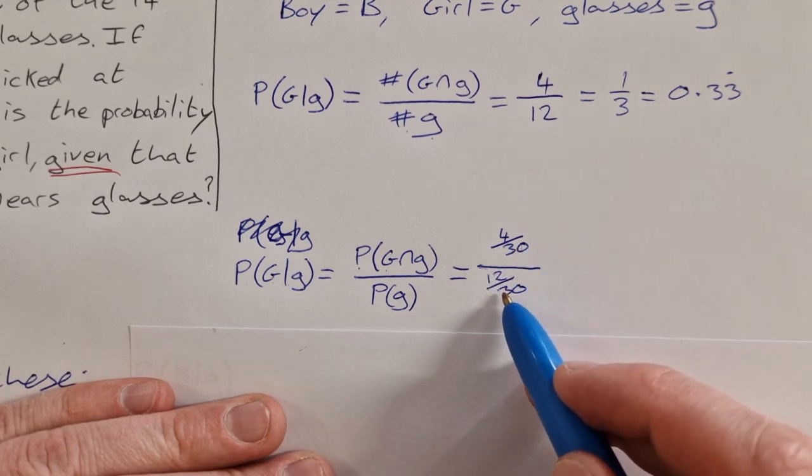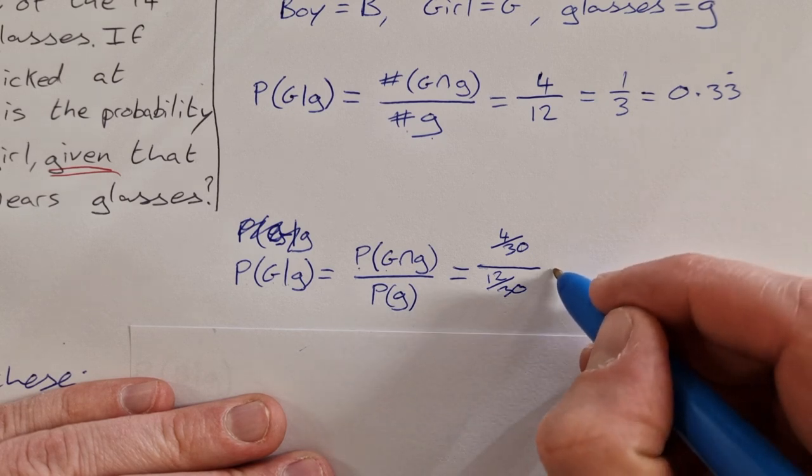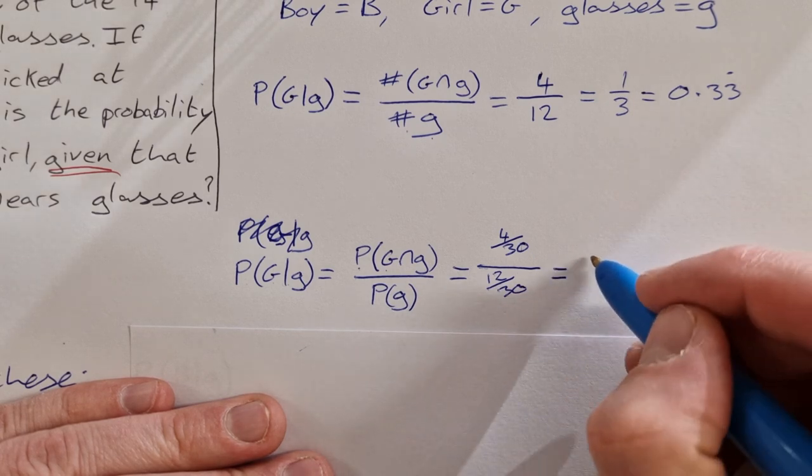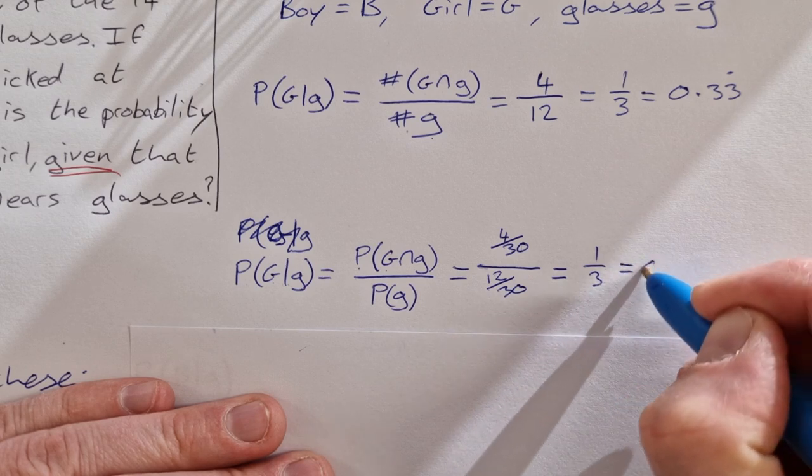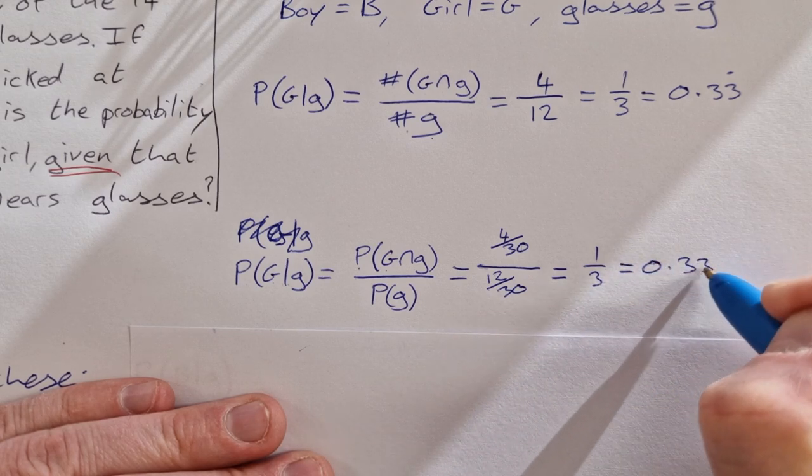So 4 over 30 divided by 12 over 30, you can pop that into your calculator and you should get the same answer, which is one third or 0.333 recurring.